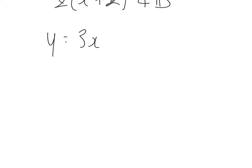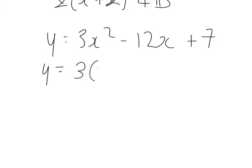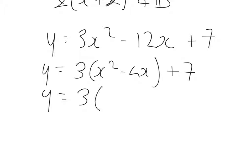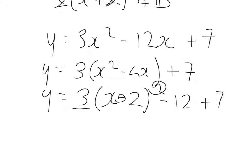3x squared minus 12x plus 7. Again, a numerical common factor of 3, bracket x squared minus 4x, close the bracket, plus 7. Complete the square. So, half the minus 4 down to a minus 2, all squared. Minus 2 squared is 4, but times that by 3, and that's 12. So, I need to take away 12 and still add on 7. And that will give me 3 bracket x minus 2, all squared, minus 5.